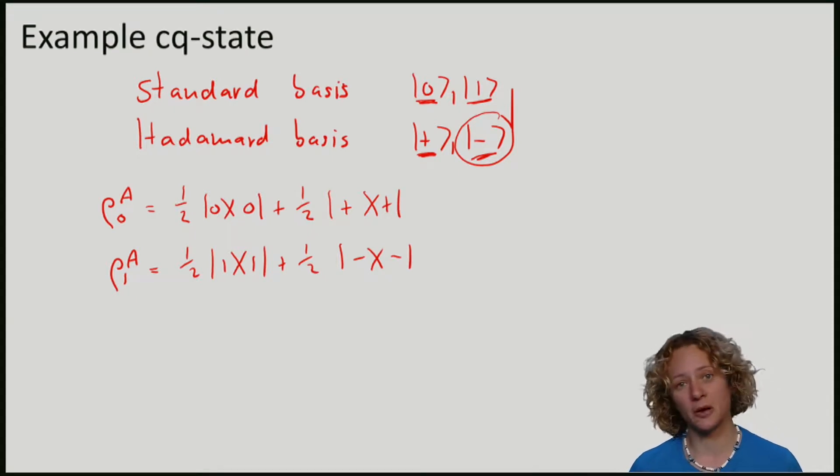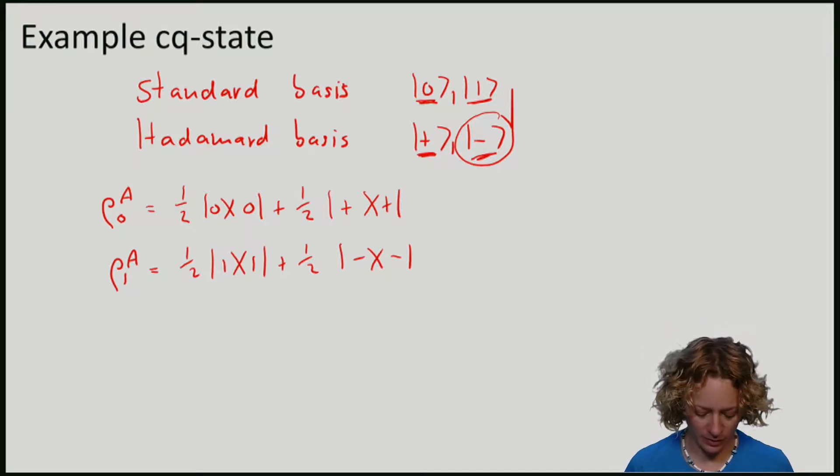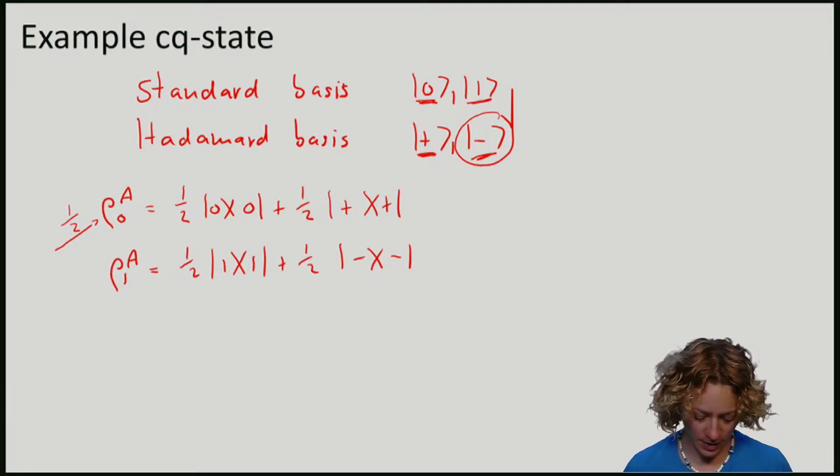Let's imagine now that we will choose which bit to encode randomly. I will, with probability half, choose to prepare the system A in the state ρ⁰ and with probability half in the state ρ¹.